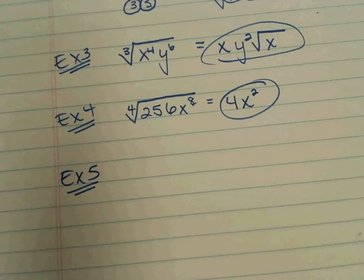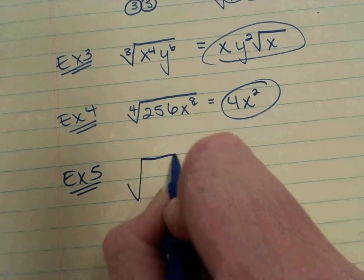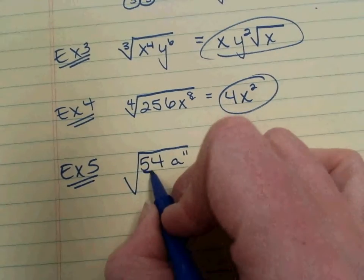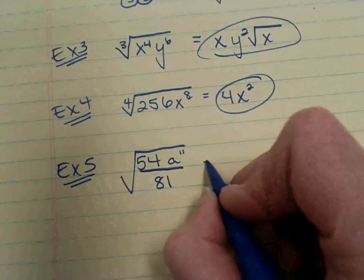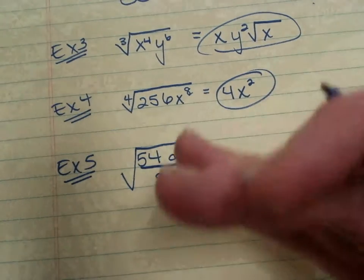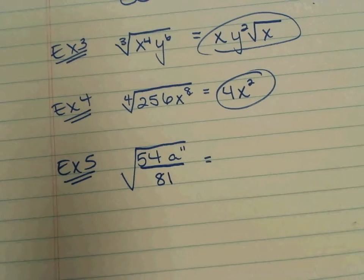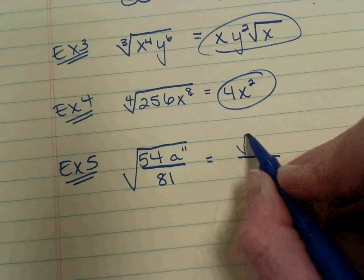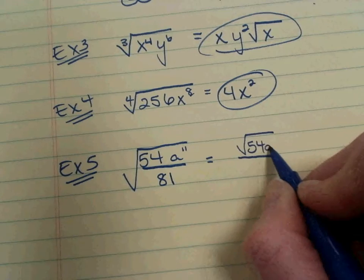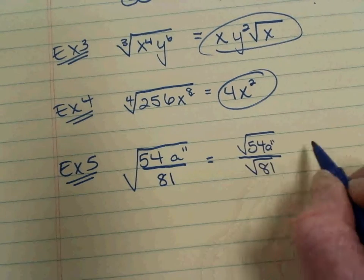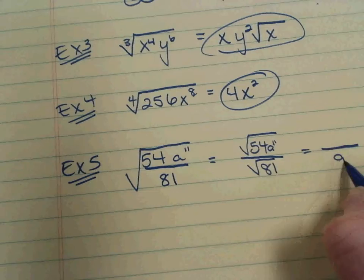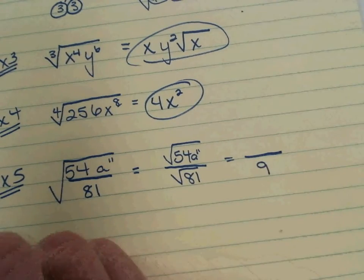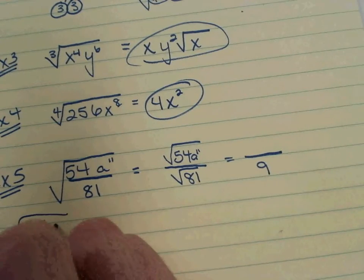Last one. Example 5. Square root of 54 a to the 11th over 81. Anybody see a place you want to start on this one? Start where I'm confident. So I know that this breaks into square root of 54 a to the 11th over the square root of 81. Square root of 81. I know that one. That's 9.